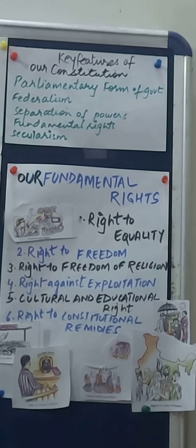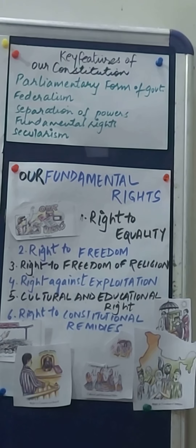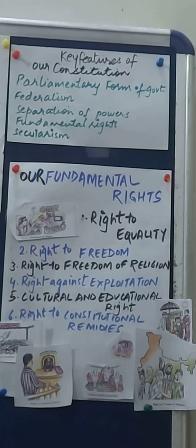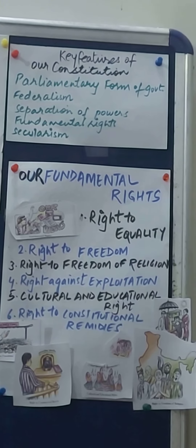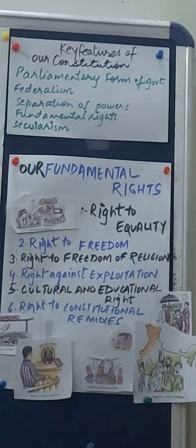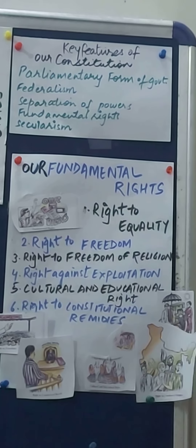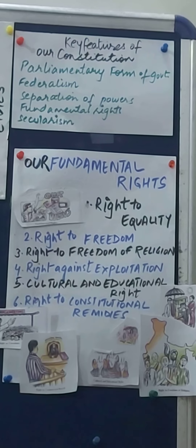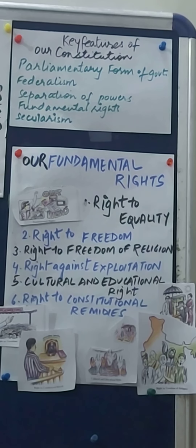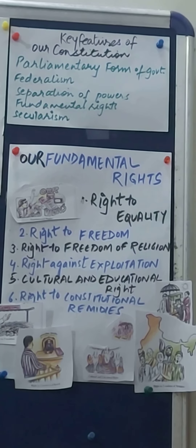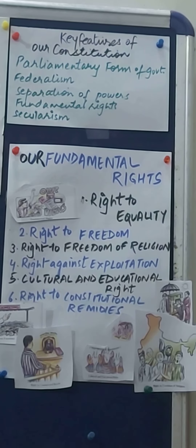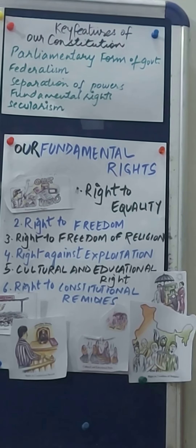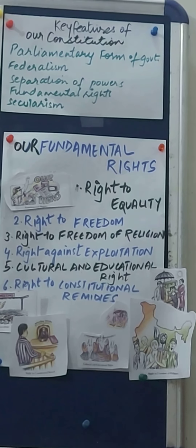We also have a bicameral legislature. Our constitution provides for two houses of parliament at the centre — the Lok Sabha and the Rajya Sabha. The Lok Sabha is the lower house with approximately 545 to 550 members who are directly elected for five years by voters of the age of 18 years or more. The Rajya Sabha is the upper house representing the states of the Indian union. It is a permanent house with one-third of its members retiring after every two years.